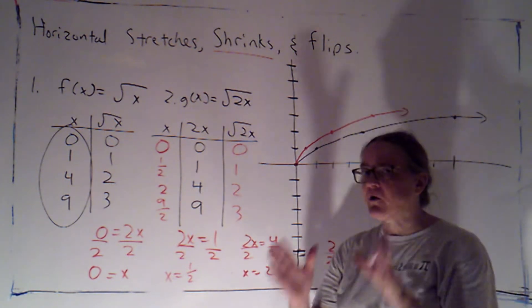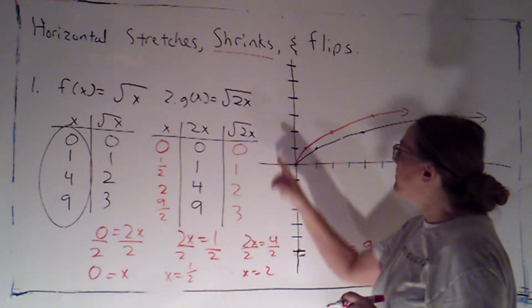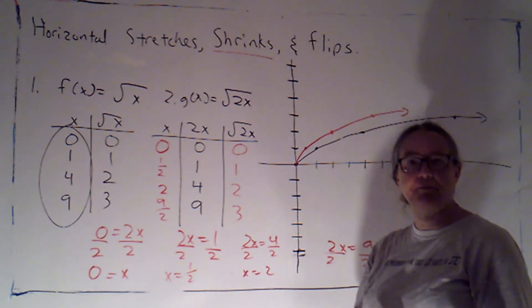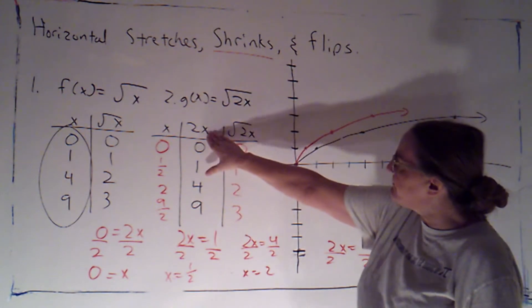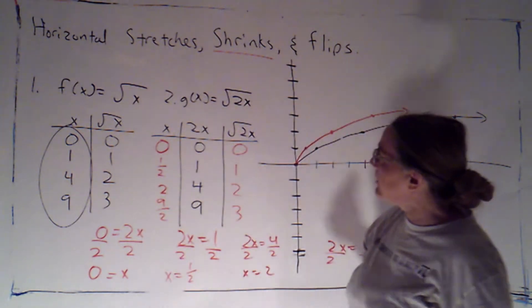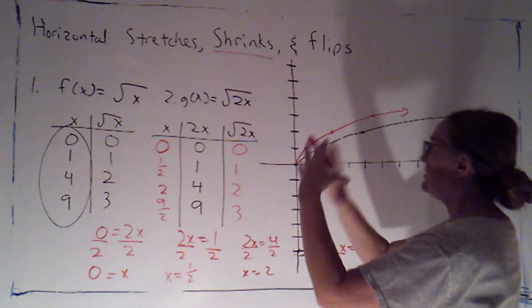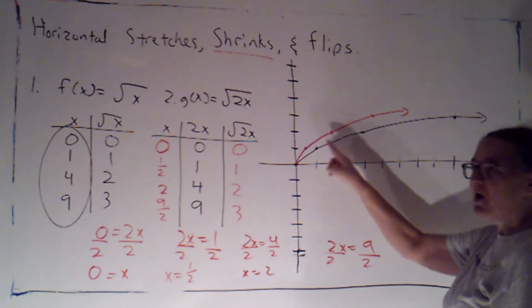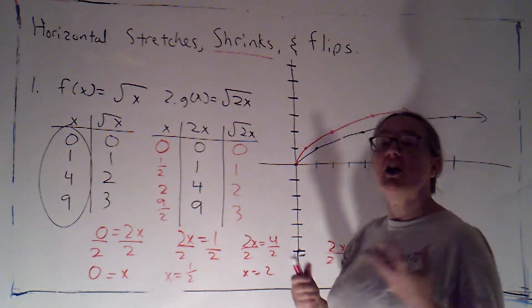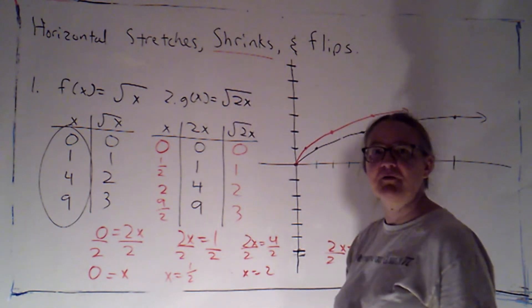So just like with horizontal shifts, adding 2 moves things 2 to the left. Now, multiplying by 2 shrinks things by a factor of 1 half, the reciprocal of 2. So because when we modify the input, we have to undo that multiplication to solve for x, horizontal transformations are a little bit counterintuitive. Doubling the x value that we're going to plug in actually shrinks the x value that's associated with any given y value. So multiplying by 2x before we plug into the function shrinks the graph horizontally by a factor of the reciprocal of 2, or by a factor of 1 half.